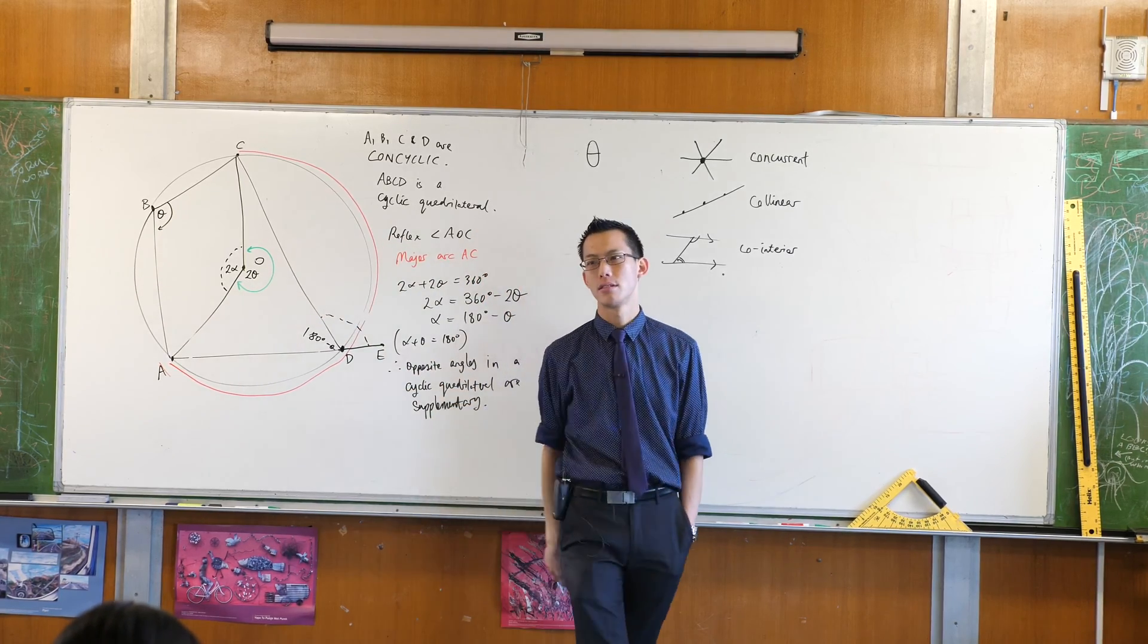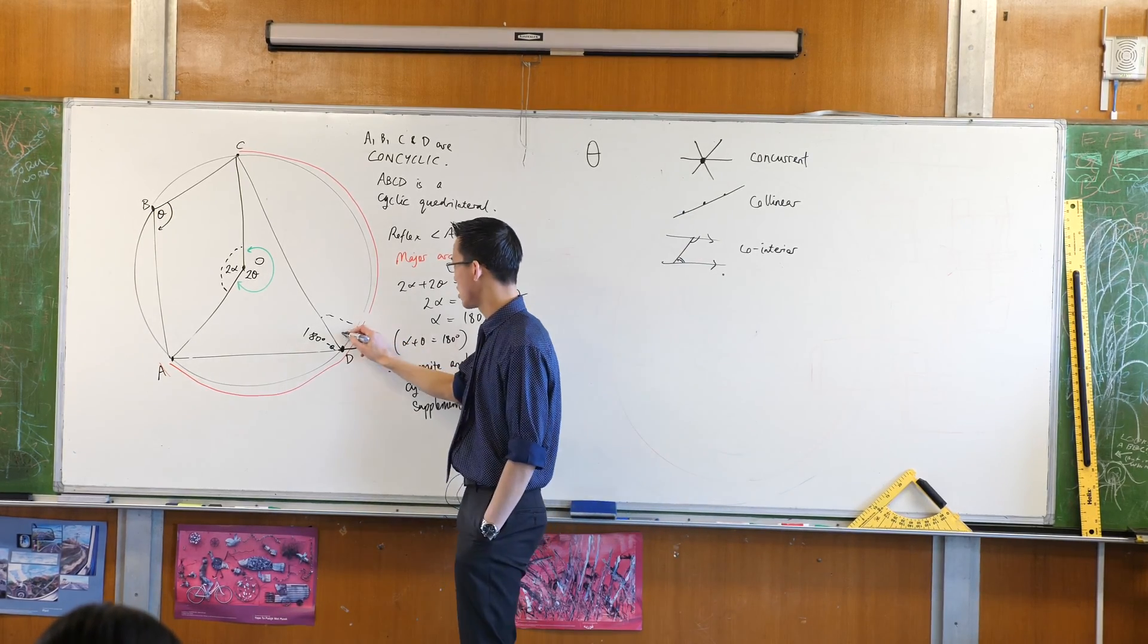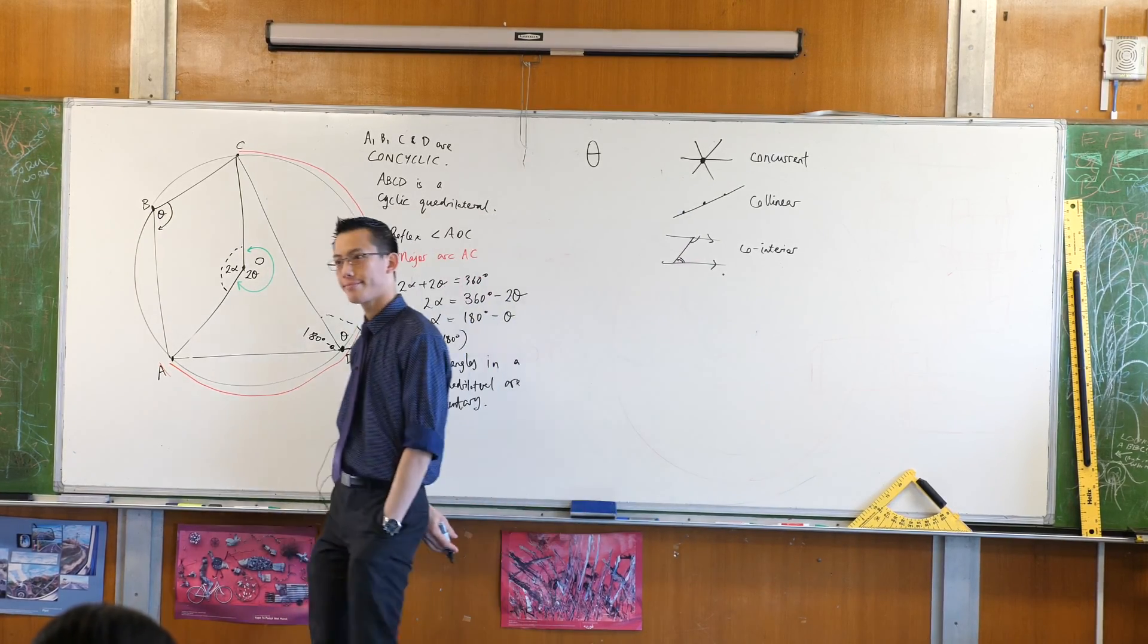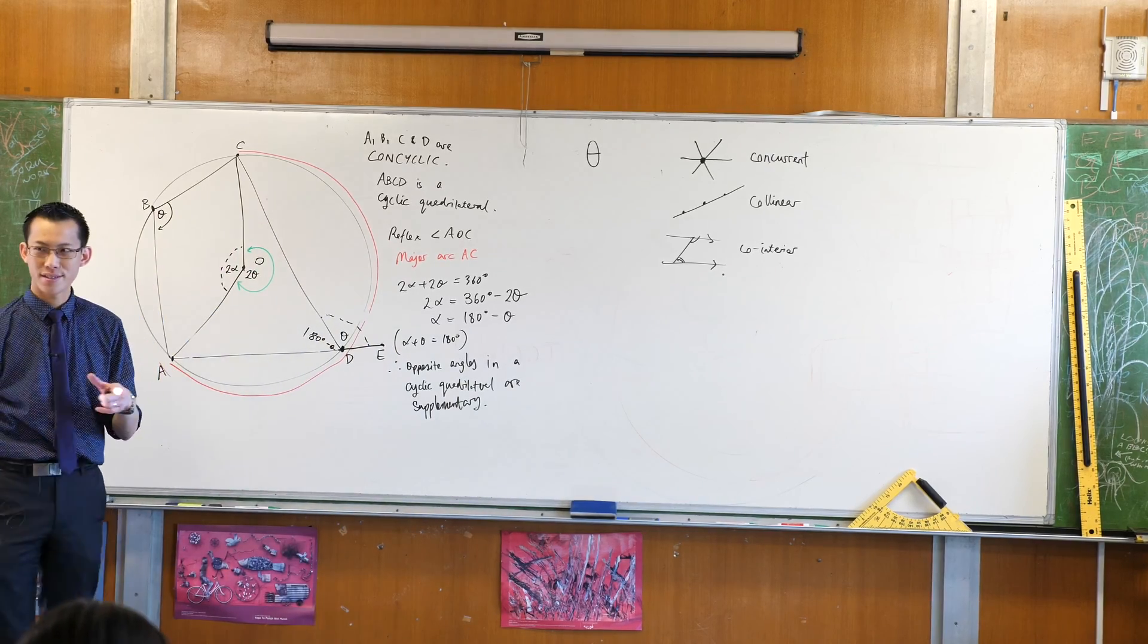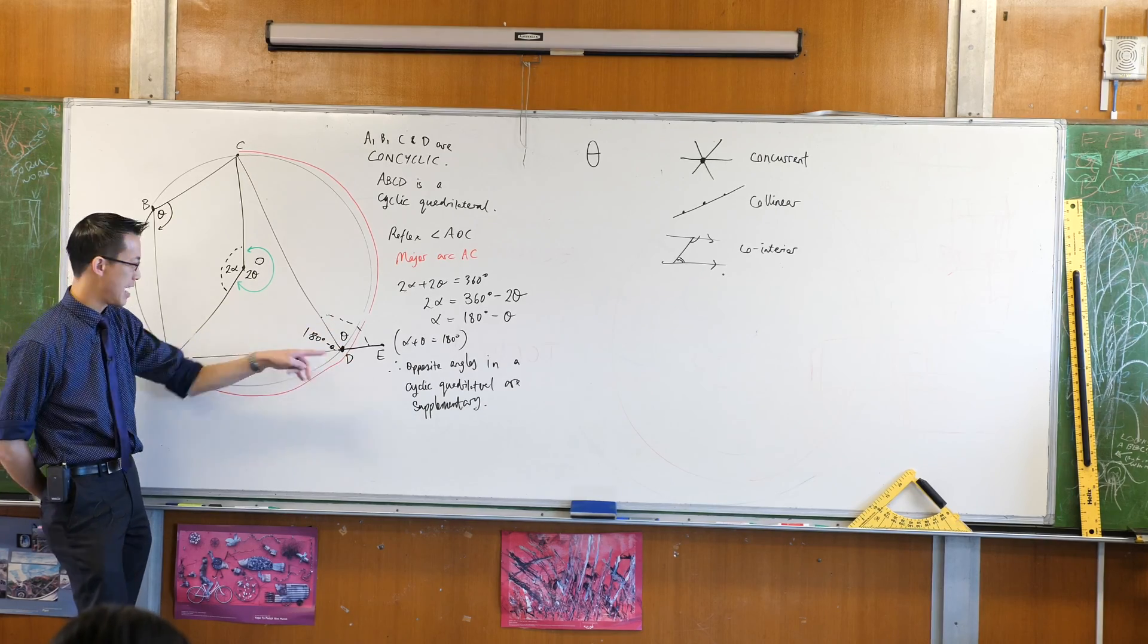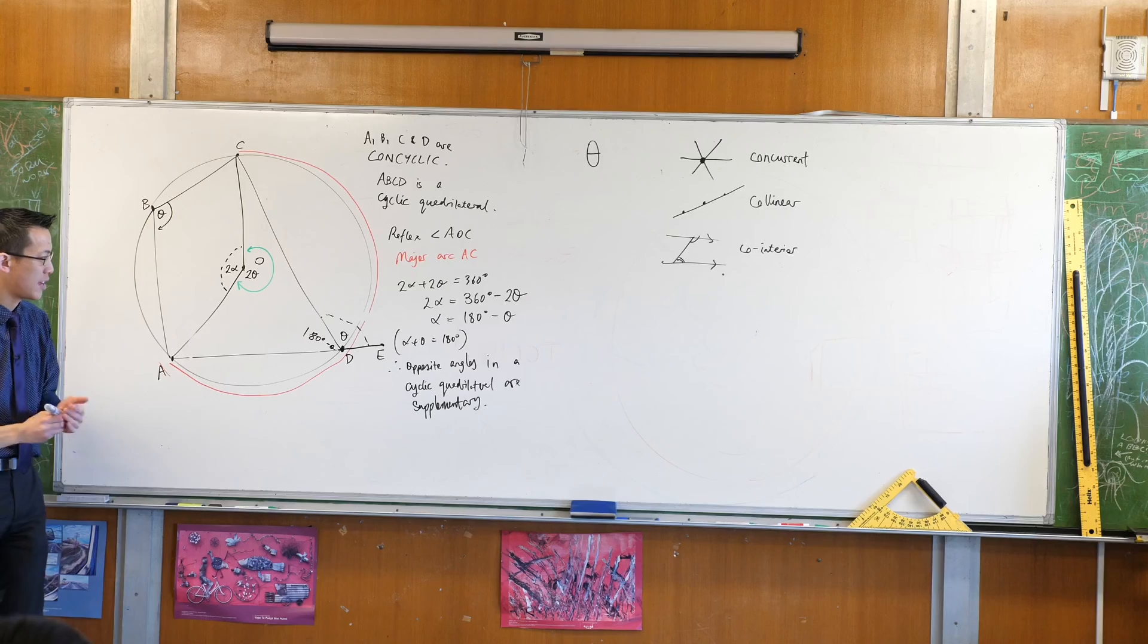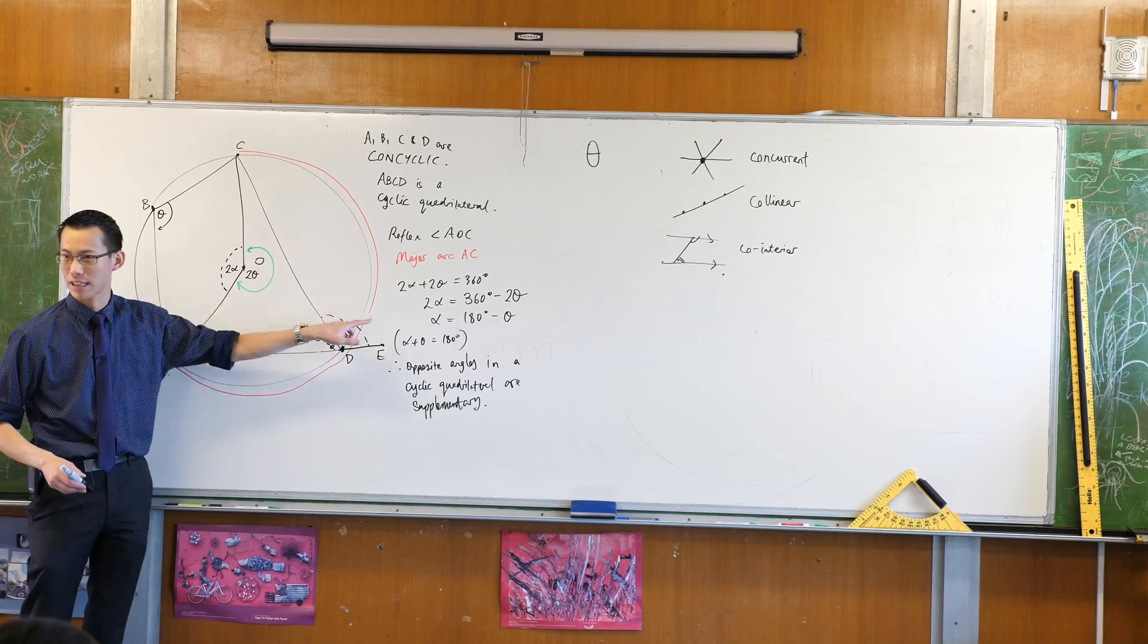If you produce AD out to E, then can you tell me what this new angle is that we formed here? CDE, what's its size? It's just theta, isn't it? It's just theta. Why is that? Because what's the relationship between these two angles? They are angles on a straight line, right? And angles on a straight line, as we know, add up to 180 degrees. So therefore, there's this nice sort of matching relationship here.